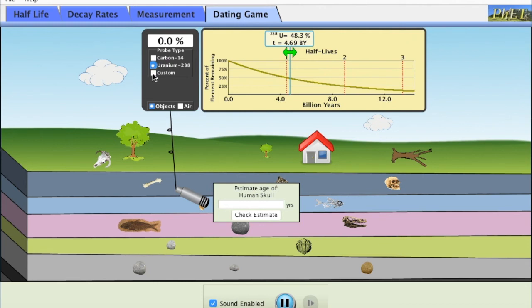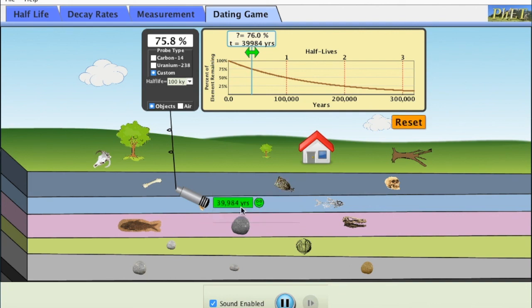We're going to put that on the various objects on this graph in order to determine how old each one of those objects are. So when I selected that human skull and put my probe on it for carbon it had 0.8 percent. Well this graph doesn't work all the way down to 0.8 percent. It works 100 percent all the way through 10 percent. So I had to switch through uranium which it had 0 percent of down to custom which it had 75.8 percent of. Now that it's between that 100 and 10 percent I could take that sliding bar, put that on 75.8 percent or as close as possible, and it told me how old that object is.